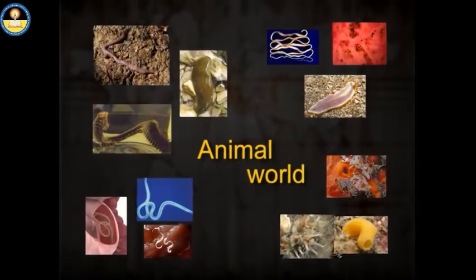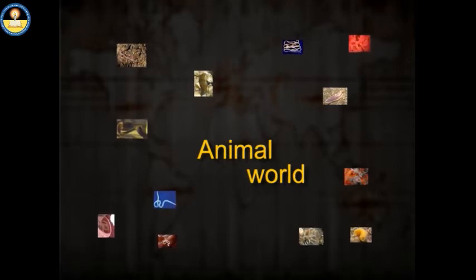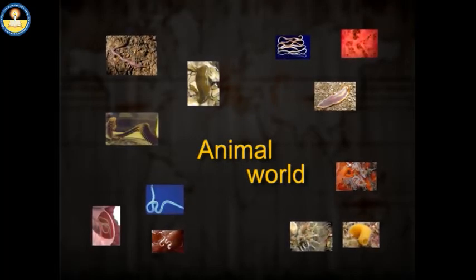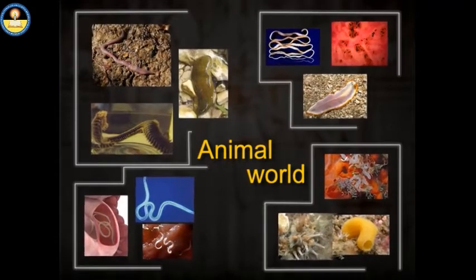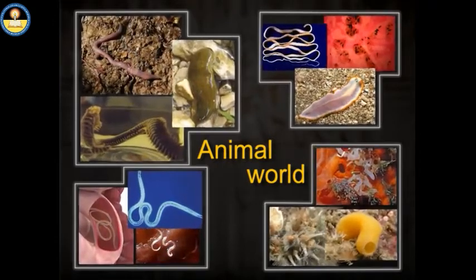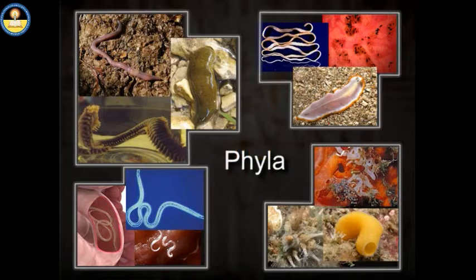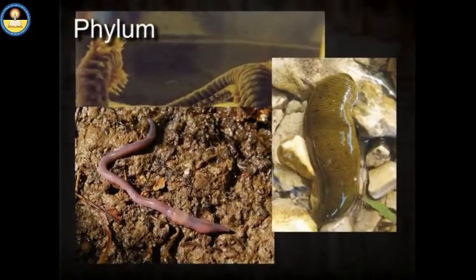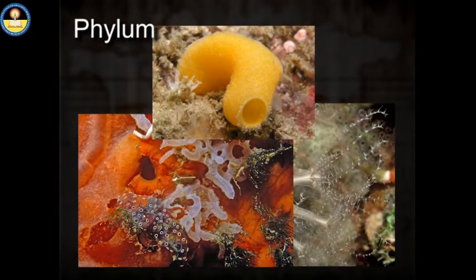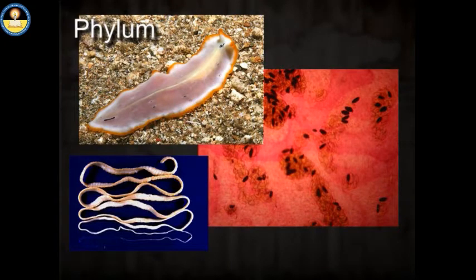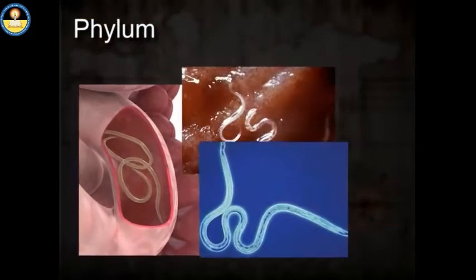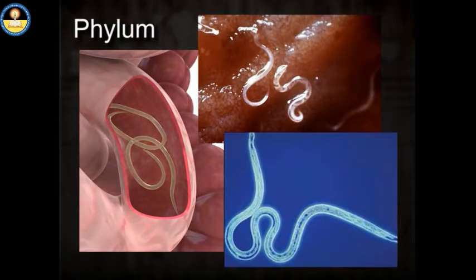Animal world. There are millions of types of animals that exist in nature. In order to understand how all living organisms are related, they are arranged into different groups. These groups, in case of animals, are known as phyla. Each phylum contains organisms that have things in common. The common features of all animals which fall in one phylum form the basis for the classification of these animals. Let us discuss each phylum one by one.